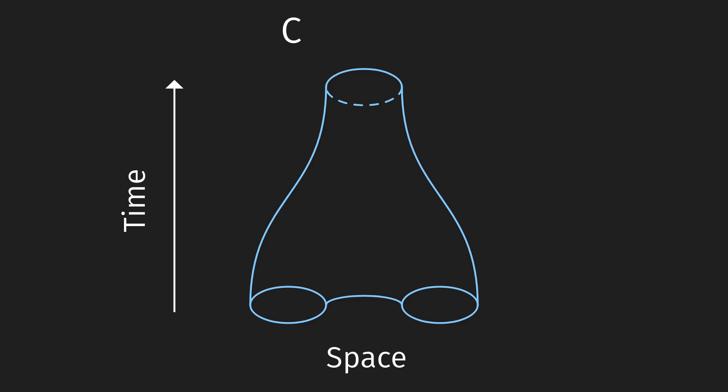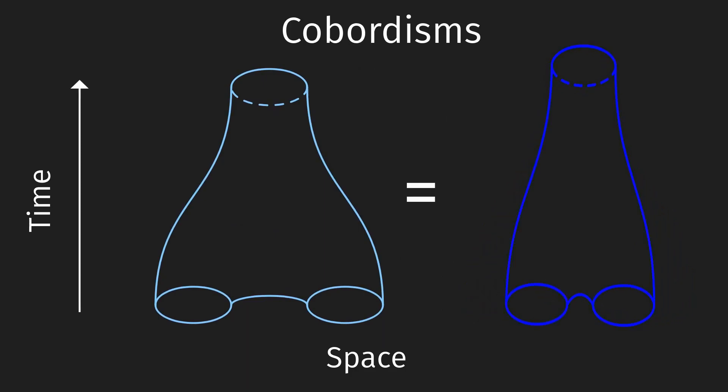We call such shapes cobordisms. We only care about the topological shape of these cobordisms. This means that we can stretch or squish the shape as if it were rubber. This is where the topological in topological quantum field theory comes from. So, for example, these two cobordisms, which look different at first sight, are really the same. Mathematicians have come up with a brilliant name for this shape. They call it a pair of pants.